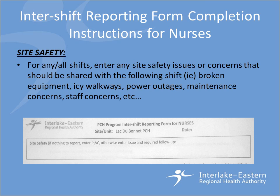This is an example of the top part of the inter-shift reporting form that will detail any site safety information to be shared with the following shift. This is not an all-inclusive list, but any site safety issues or concerns should be entered here — for example, broken equipment, icy walkways, power outages, maintenance concerns, staff concerns, etc. It should be brief, just a cue for the following shift to be aware of issues. This part of the form in no way replaces the necessity for documentation of occurrences.